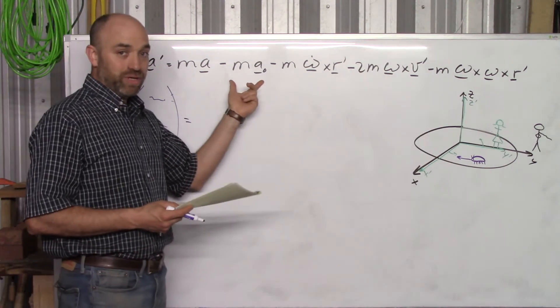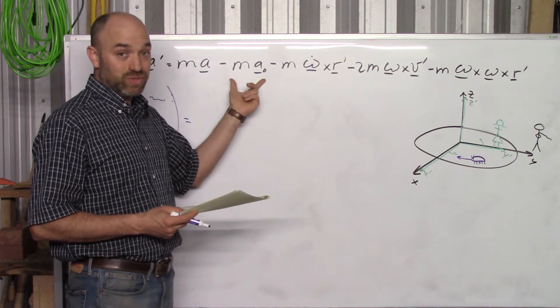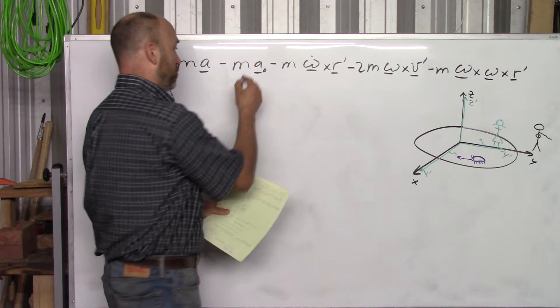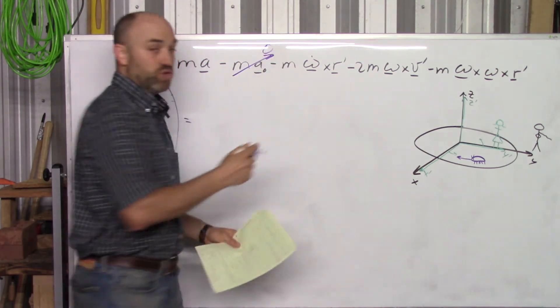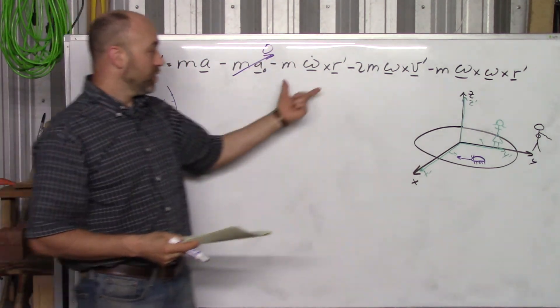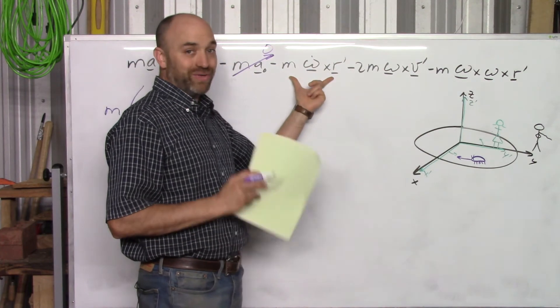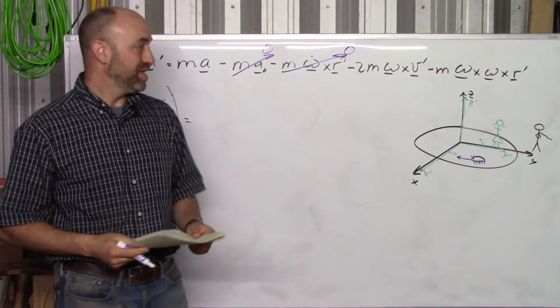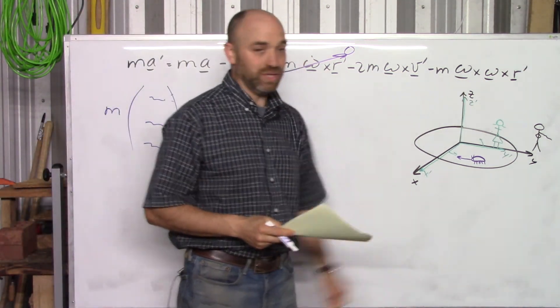Now the coordinate system that Sally Sue is standing on is not linearly accelerating. It's only spinning. So we'll get rid of this piece altogether—there's no linear acceleration. Not only that, but it's a record player that's not getting faster or slower. So this piece is also gone because omega dot is gone. But you will have both of these.